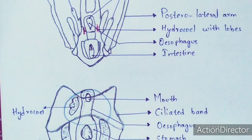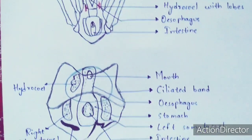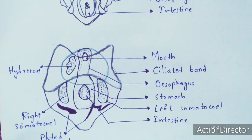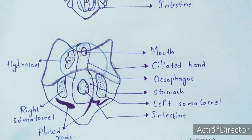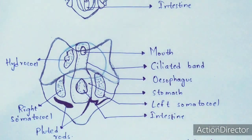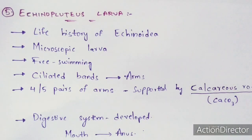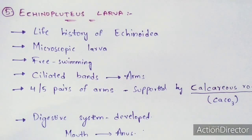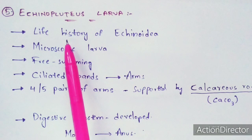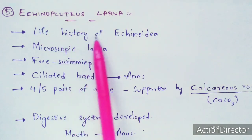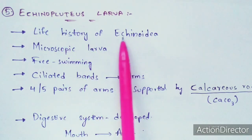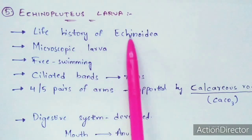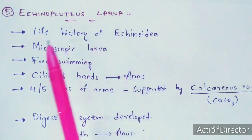The hydrocoel lobes are shown in red in the diagram. That completes the ophiopluteus larva. Now let us learn the next type — coming to the fifth form, the echinopluteus larva. This echinopluteus larva belongs to the life history of Echinoidea, as the name itself indicates.